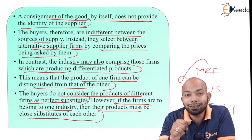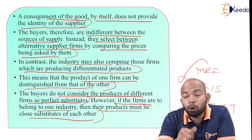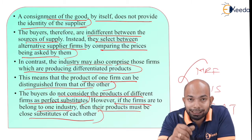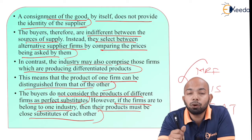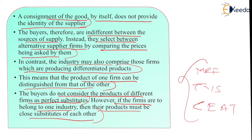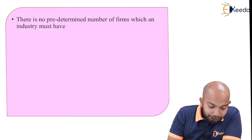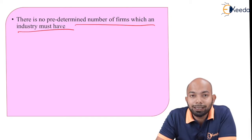The buyers do not consider the products of different firms as perfect substitutes; however, if the firms belong to one industry, the products may be close substitutes. Buyers won't consider these products as perfect substitutes, but if they belong to the same industry, they can be close substitutes of each other — so instead of MRF tires you can opt for CEAT, instead of CEAT you can opt for TVS. There is no predetermined number of firms which an industry must have.